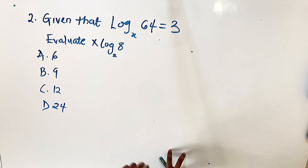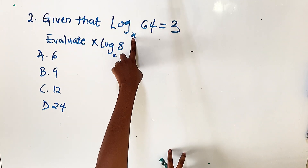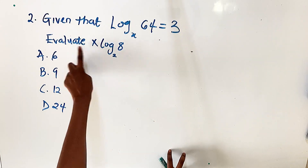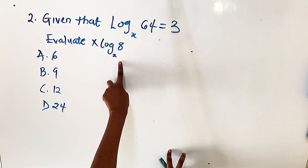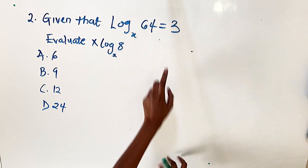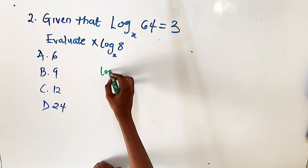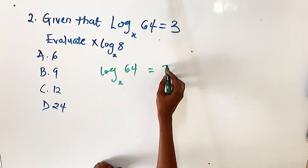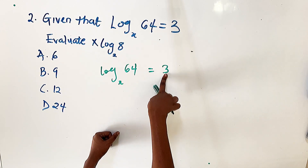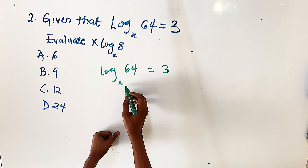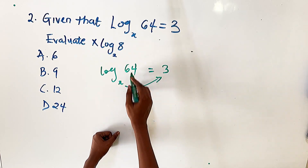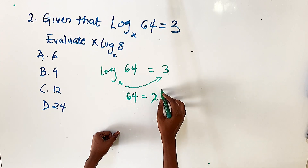Question number two: given that log 64 base x equals 3, evaluate x · log 8 base 2. Let's start by simplifying the first expression to find x. We have log 64 base x = 3. Using the rule, the base x raises the right-hand side, so 64 = x³.